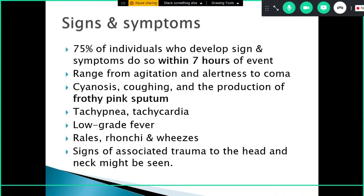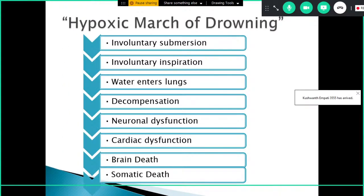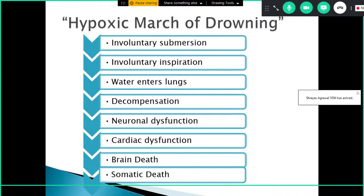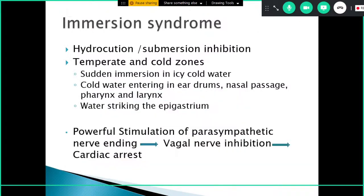The chain of events in drowning: initially there is submersion, where the body comes in contact with the fluid. Then there is inspiration, where fluid enters the respiratory tract and water enters the lungs — this occurs in wet drowning, not dry drowning. This is followed by decompensatory mechanisms, neuronal dysfunction, cardiac dysfunction, and finally brain death and somatic death.